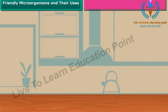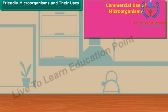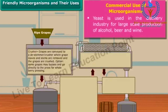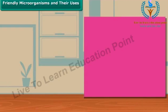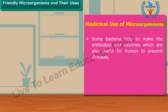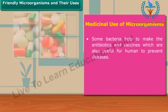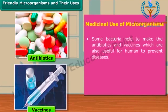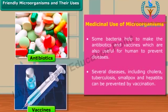Microorganisms are also useful in the commercial and medicinal field. For instance, yeast is used in the distillery industry for large-scale production of alcohol, beer, and wine. Some other bacteria are helpful in the production of antibiotics and vaccines. Vaccination is helpful in several diseases including cholera, tuberculosis, smallpox, and hepatitis.